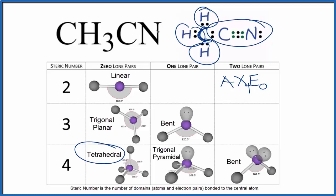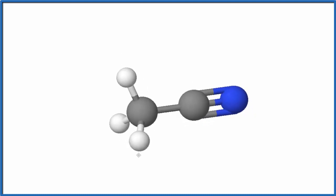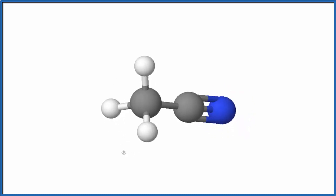Let's take a look at the polarity for CH3CN. Here we have our molecule - the blue is the nitrogen, the gray are the carbons, and the whites are the hydrogens. We want to see, is this a polar molecule?